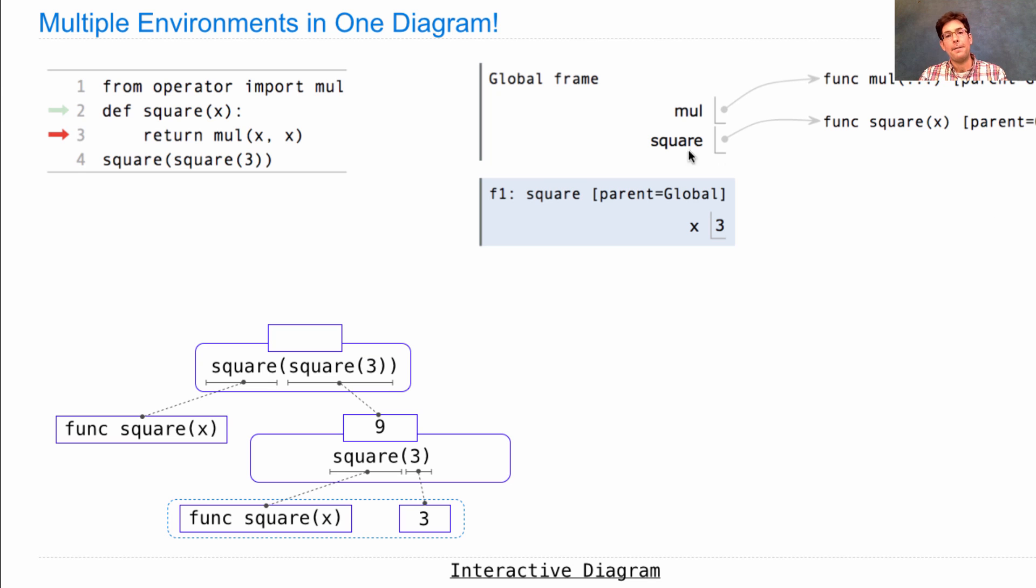After creating the frame, we bind the formal parameter x to the argument value 3, and then we can evaluate the return expression, which means multiplying x times x. Now what's x? Well, it's 3. This is the first frame of the current environment, where 3 is defined. And we get a return value of 9. So this return value we can draw into our expression tree there.